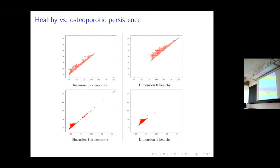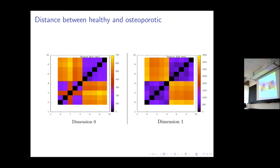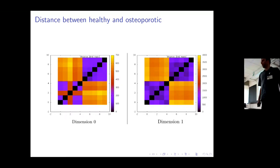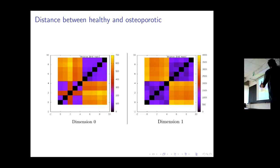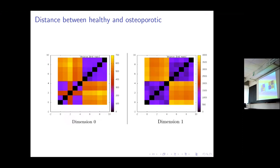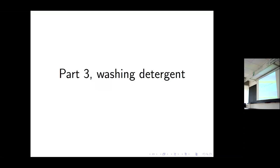We take five controls and five patients and compute distances between the diagrams. The heatmaps of the distance matrix in dimension zero and dimension one clearly show two groups of five that are similar within groups but very different between groups. In fact, we can do more — we can predict how resistant the bone is based on persistence diagrams using random forest regression or any type of regression you prefer.